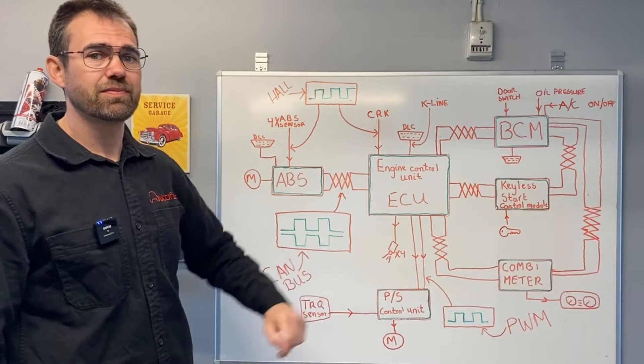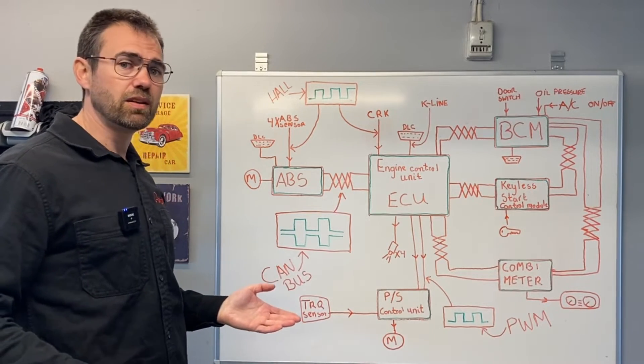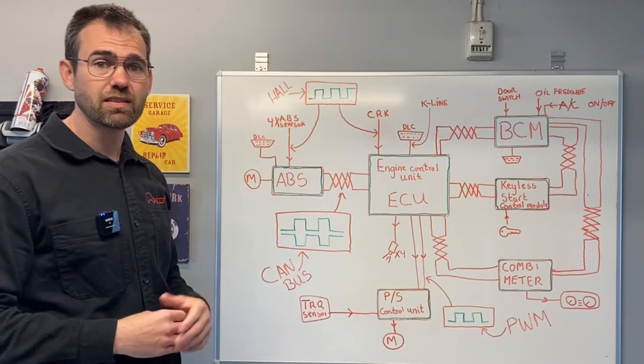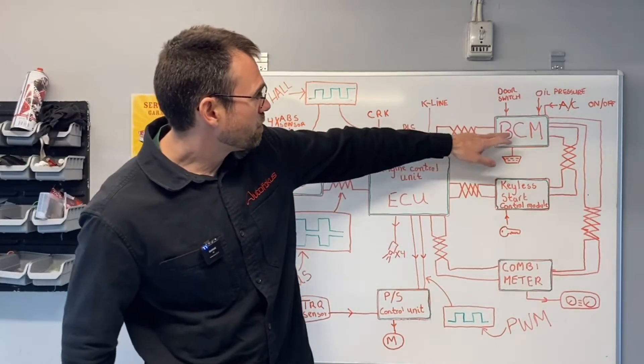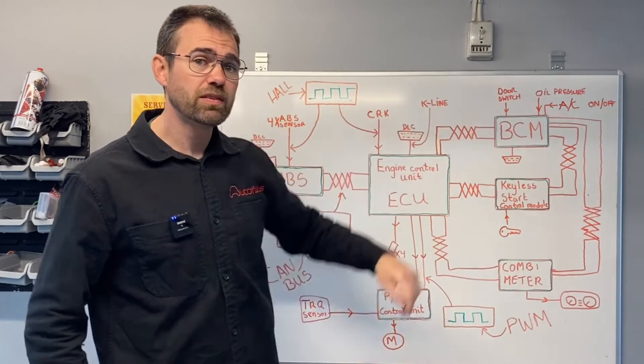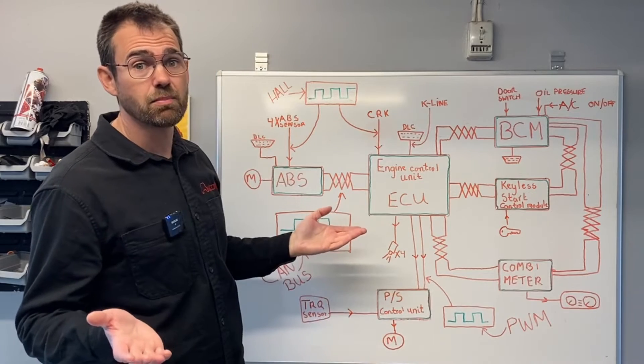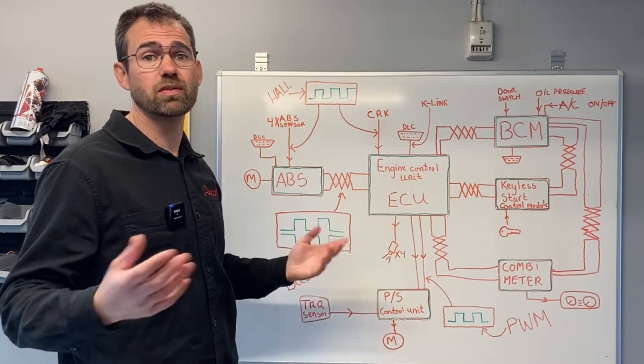Based on all those inputs, it controls a lot on the engine. As an example, it controls the four injectors, how much fuel should be injected to the car, the EGR valve, ignition coils, etc. The body control module, as an example, gets an input from the door switch if the door is open and closed, and could use that to illuminate the interior light inside the cabin when the door is open.